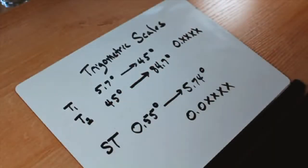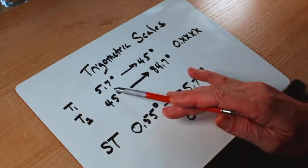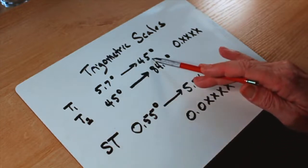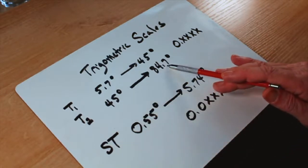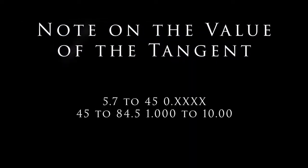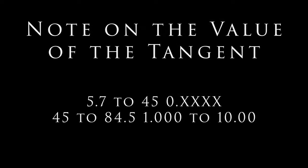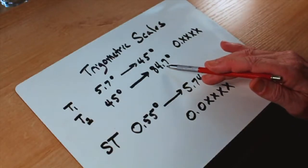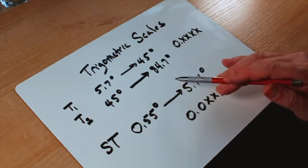The next scales that we'll have a look at are the t-scales, and they're for tangent. On some slide rules, they're divided into two t-scales, a t1 and a t2. One will go from 5.7 degrees up to 45 degrees. Another will go from 45 degrees up to the max of about 84.7 degrees. The reason the slide rule stops here on the tangent is as you approach 90 degrees, the tangent rapidly goes to infinity.